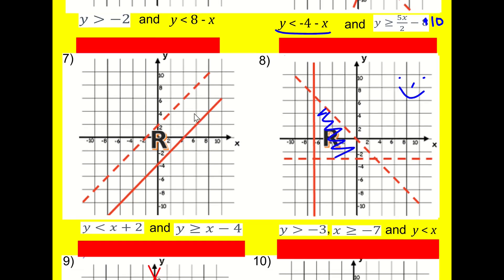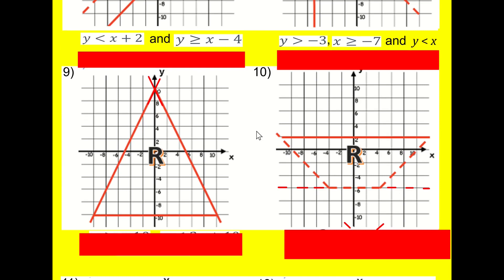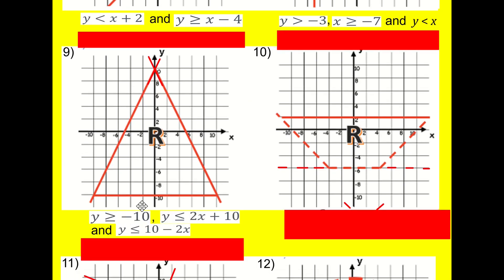Getting serious now. Number nine: y is greater than or equal to minus ten — that's everything above this horizontal line. Y is less than or equal to two x plus ten — gradient is two, goes through ten. And we've also got y is less than or equal to ten minus two x. All of them can equal the line because they're all solid lines.